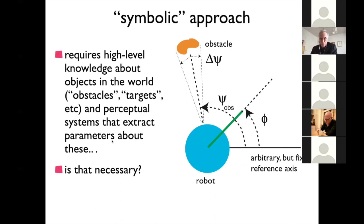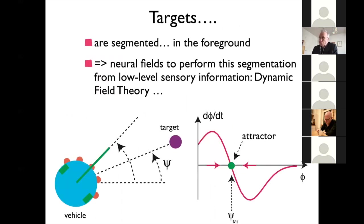So those were sort of objects — countable things — which would require that you have some perceptual system that extracts these parameters from objects in the world, which is not actually necessarily an easy thing to do. So symbolic in that sense: discrete different instances of the classes target and obstacle would have to be created, and corresponding forces generated. For targets, one could argue you do need that, since targets are objects different from the background.